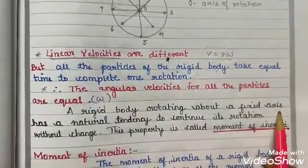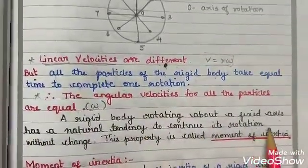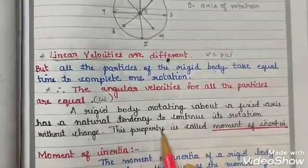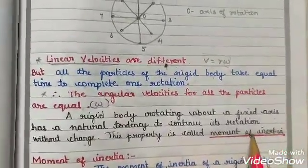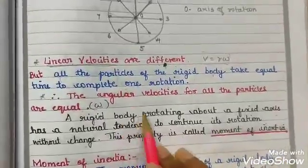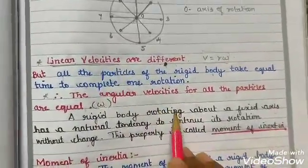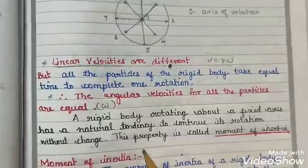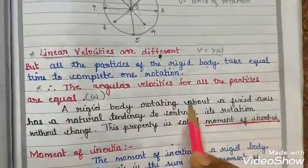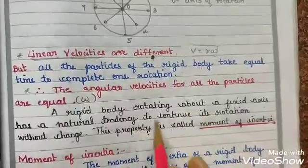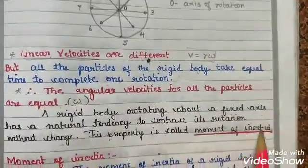A rigid body rotating about a fixed axis has a natural tendency to continue its rotation without change. This property is called moment of inertia. If an external force acts, that is what changes the state - otherwise it will remain in the same state of rotation.